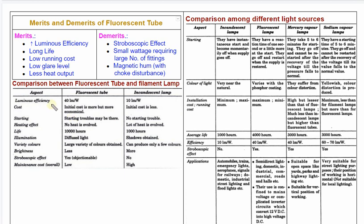The first comparison metric is luminous efficiency. The fluorescent lamp is 40 lumens per watt, and the incandescent lamp is about 4 times less efficient — approximately 10 lumens per watt. The next metric is initial cost.